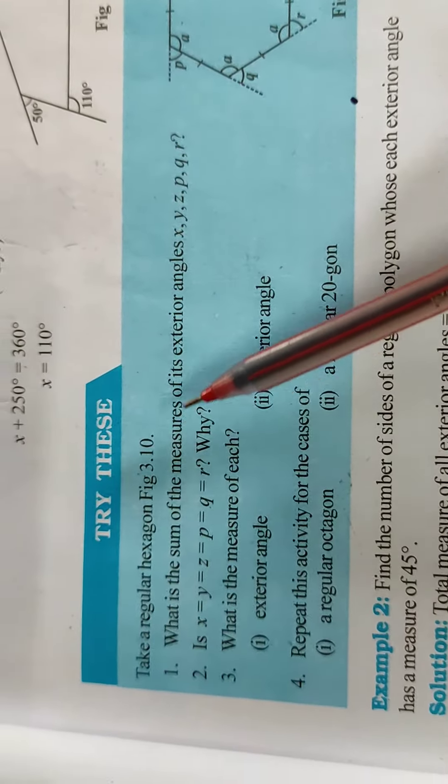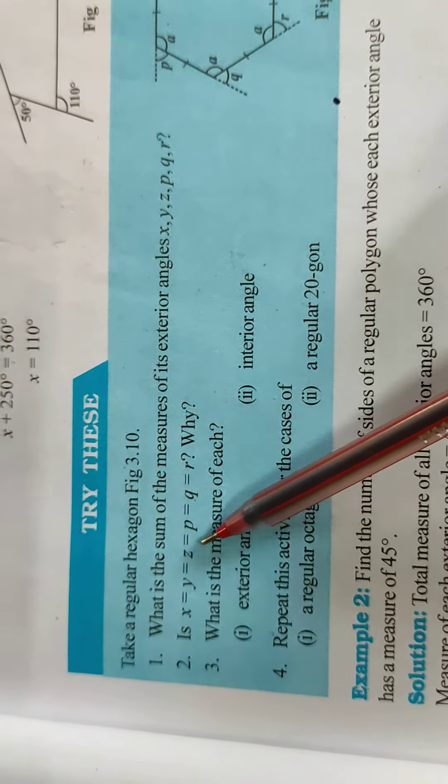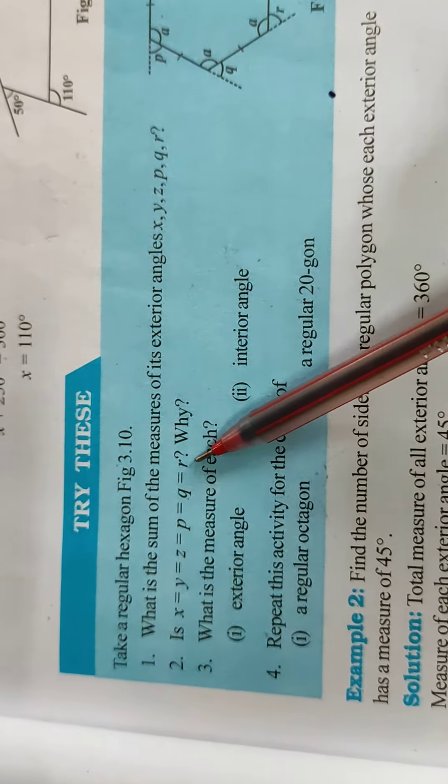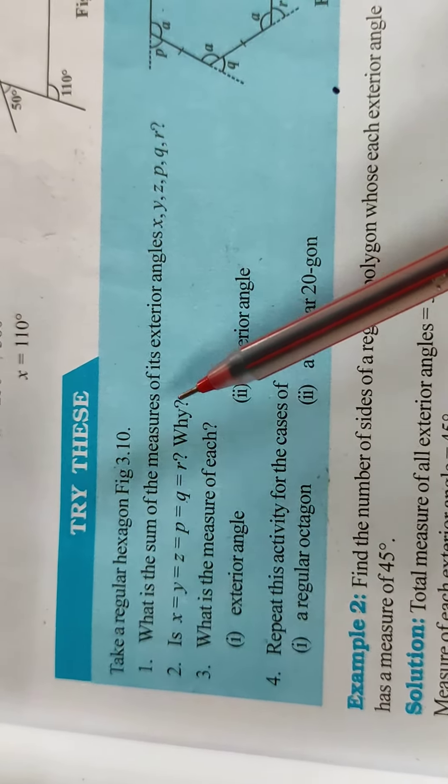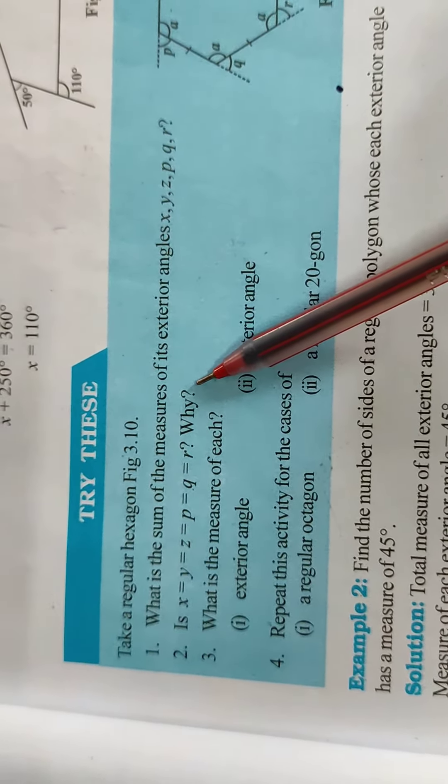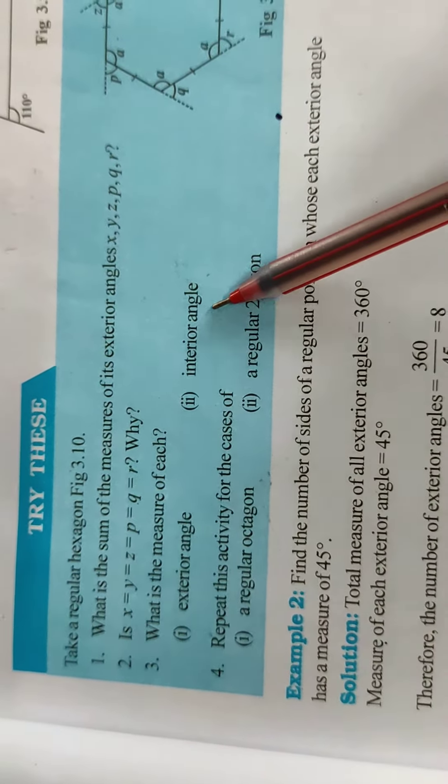So is x equal to y equal to z equal to p equal to q equal to r. Why? According to the definition of regular polygon so you will write here definition. What is the measures of its exterior angle, interior angle?